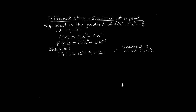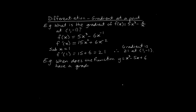Now the other type of example we're going to look at is where you're asked for what value of x will have a particular gradient. So something like: when does the function y = x³ minus 5x + 6 have a gradient of 7? Notice this time the question is in reverse — we're told the gradient but we don't know at which point or coordinates.